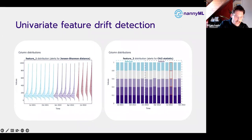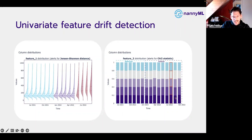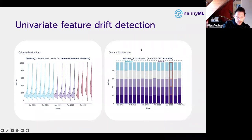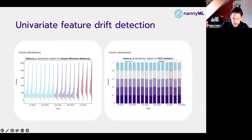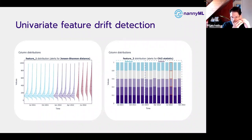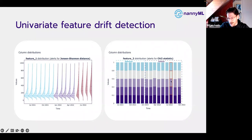If a feature is not important to the model, we don't want to be alerted by its distribution change. That is why we first do performance obsession, and then only when there's a drop in performance do we go and delve into data drift detection — otherwise we will just get too many false alarms and too much alert fatigue.